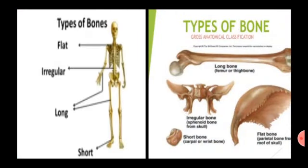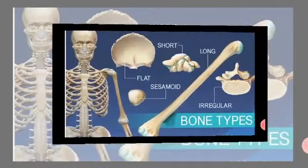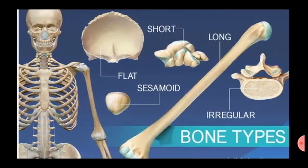Types of Bones. Bones of our body are classified into four types: flat bones, small bones, irregular bones and long bones. Let us recall what we have studied: different types of organs, function of the organs, fracture, X-ray, the human skeletal system and types of bones.